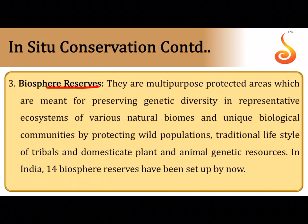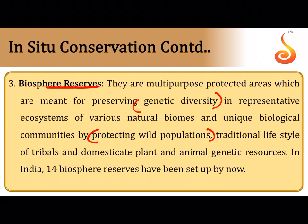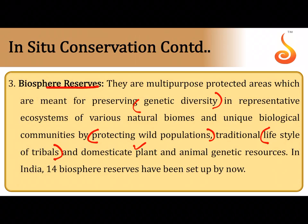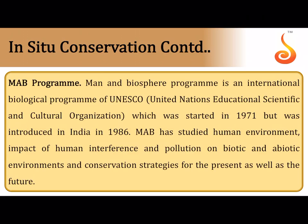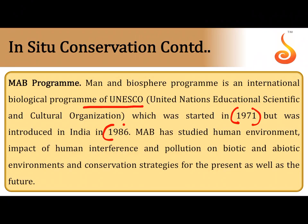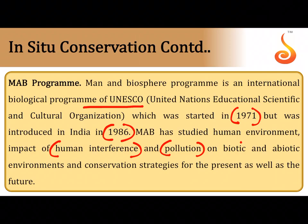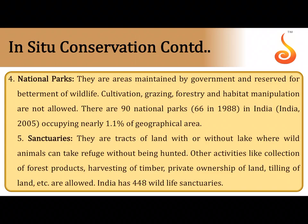Protected areas — biologically diverse areas that are protected — include biosphere reserves, which help preserve genetic diversity of organisms, protect wild populations, and also protect the lifestyle of tribal peoples. About 14 biosphere reserves have been set up in India. The Man and Biosphere Program was started by UNESCO in 1971 and introduced in India in 1986; it studies how human interference and pollution impacts both biotic and abiotic environments and devises conservation strategies accordingly.